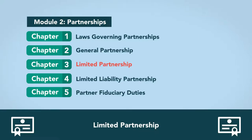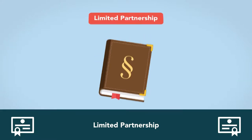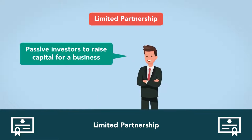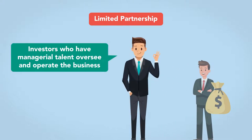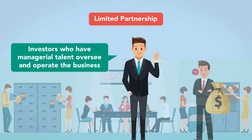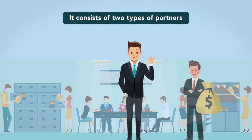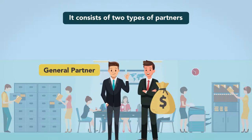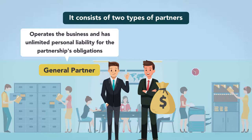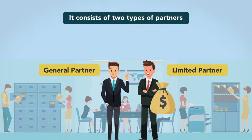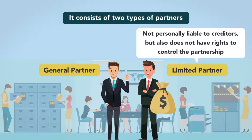Limited Partnership. The second type of partnership is a limited partnership, a creation of state statute. A limited partnership brings together passive investors to raise capital for a business and ensures they remain in the background, while investors who have managerial talent oversee and operate the business. The limited partnership is more complex than the general partnership. It consists of two types of partners: one is a general partner who operates the business and has unlimited personal liability for the partnership's obligations, and one is a limited partner who is not personally liable to creditors but also does not have rights to control the partnership.